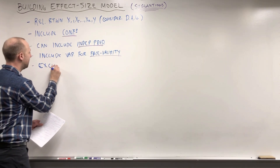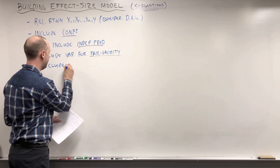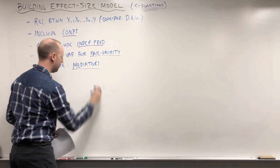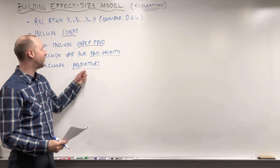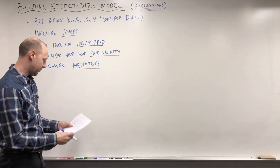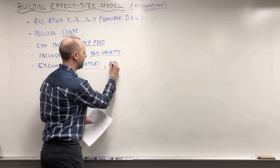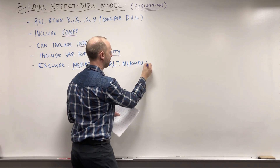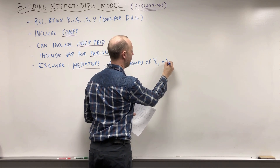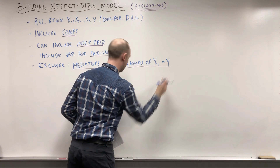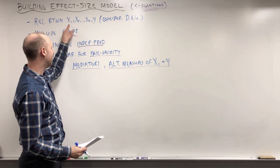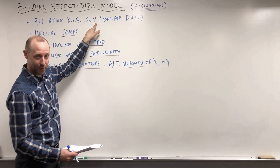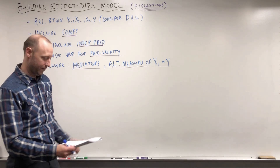You're going to want to exclude mediators — variables sitting on the pathway between X1 and the outcome. You also want to exclude alternate measures of X1 or Y. If you have some variable that's another measure of X1, or another measure of your outcome, don't include those in the model as that's going to completely distort things.